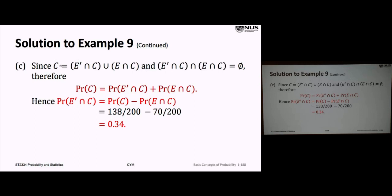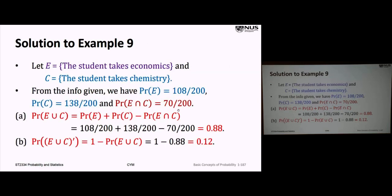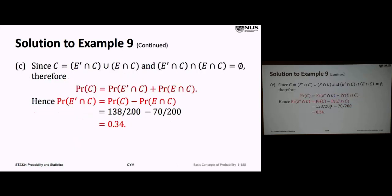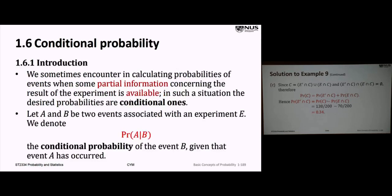We know the probability of C and the probability of E and C. Plugging in those numbers gives 0.34. Keep this identity in mind — we'll use something similar later. That brings us to a very important concept: conditional probability.